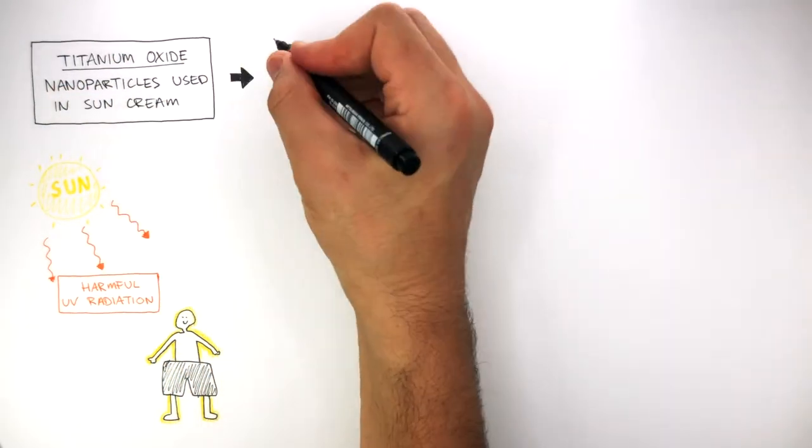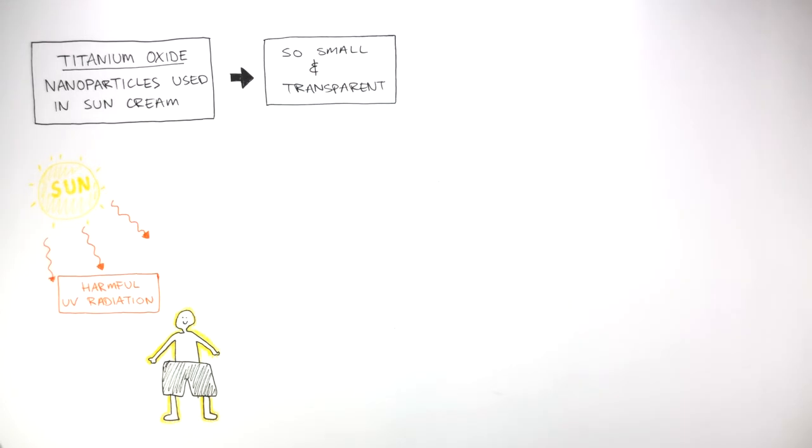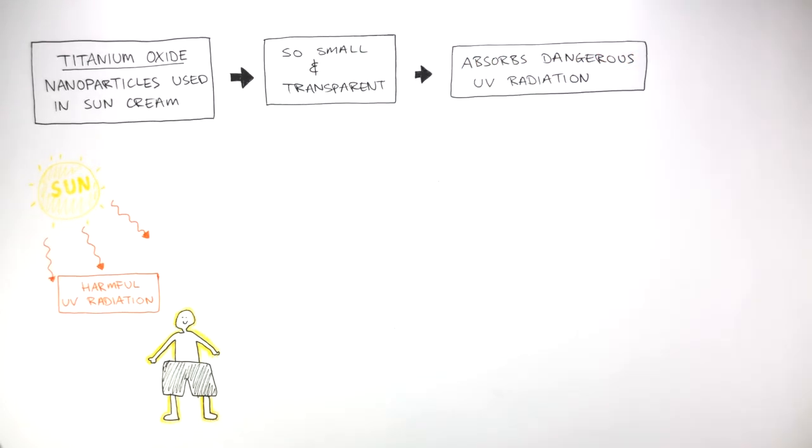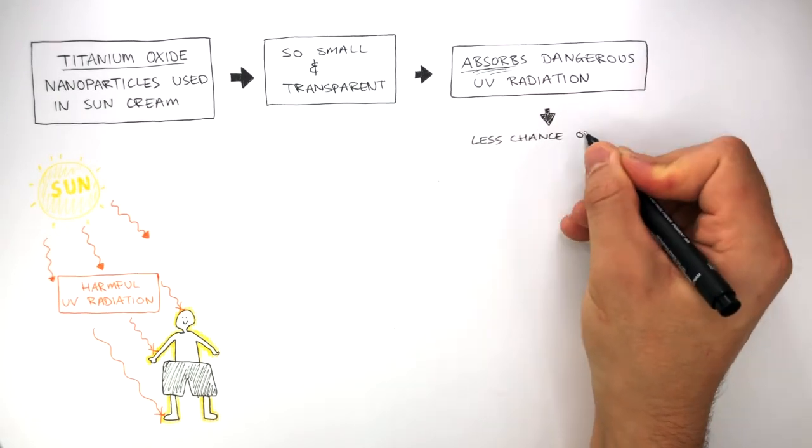The titanium oxide is so small and transparent that it absorbs dangerous UV radiation. The titanium oxide absorbs the dangerous UV radiation, meaning the person now has a less chance of cancer.